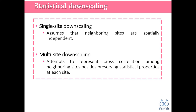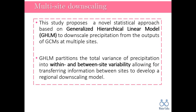This is where multi-site downscaling comes into play. In multi-site downscaling, we attempt to take the spatial correlation of hydroclimatic variables into account, because preserving the spatial behavior is very important in many hydroclimatic studies such as rainfall runoff modeling. In this study, we've developed a multi-site downscaling model using the generalized hierarchical linear model or GHLM, which is the most complete form of probabilistic multiple linear regression model.